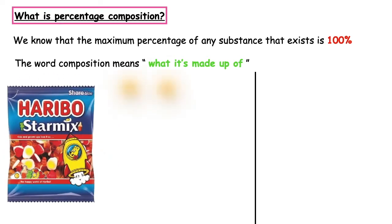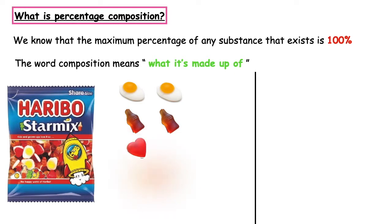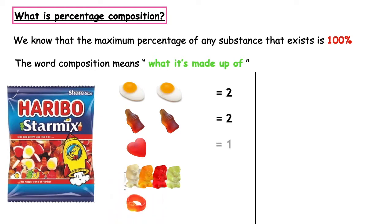It's made up of fried eggs, Coca-Cola bottles, love hearts, gummy bears and rings. If I was to add up all of the sweets that I've got on this page, I have a total of 10 sweets. All of those sweets equals 100%. That's what was found inside the packet.